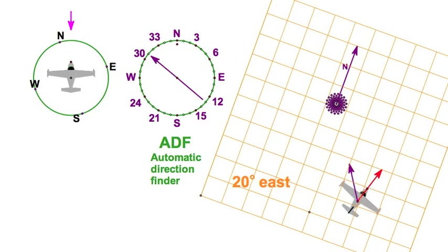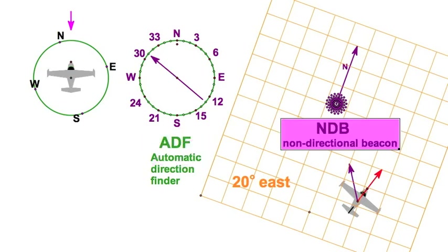So we have the ADF and we have the NDB. The NDB is the non-directional beacon. I could have said this earlier, but the NDB just transmits non-directionally. Non-directionally means all this is, is a homing signal.